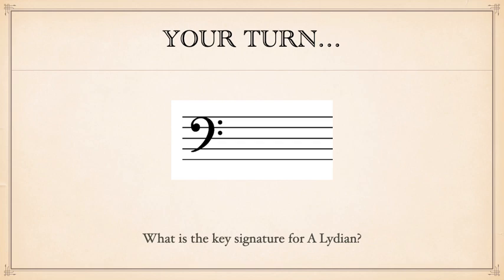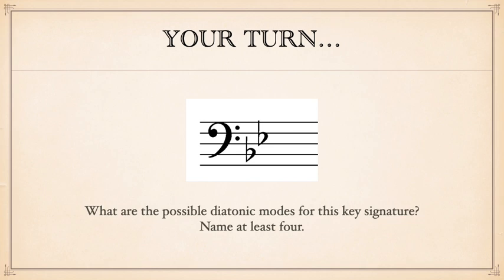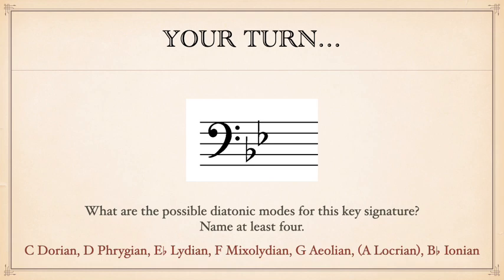What is the key signature for A Lydian? Remember that Lydian is more like major with raised scale degree four. So we need three sharps for A major and one more sharp for that Fi — a four-sharp key signature for A Lydian. For the last exercise: what are the possible diatonic modes for a given key signature? Remember, there are seven rotations, but we're focusing on four in this video. The four modes are C Dorian, D Phrygian, E-flat Lydian, and F Mixolydian. For extra points: G Aeolian, A Locrian, and B-flat Ionian.